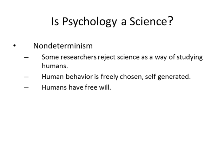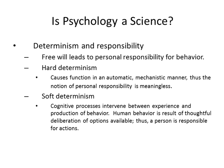We do think of psychology as a science, so what's the reality? Determinism and responsibility: free will leads to personal responsibility for behavior. Hard determinism holds that causes function in an automatic, mechanistic manner, thus the notion of personal responsibility is meaningless — everything is determined. Self-determinism holds that cognitive processes intervene between experience and the production of behavior, and human behavior is a result of thoughtful deliberation of options available, thus a person is responsible for their actions.